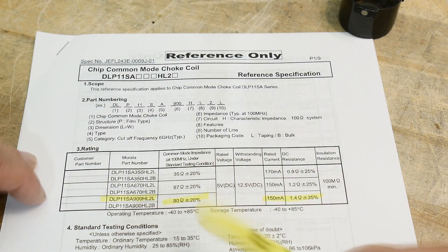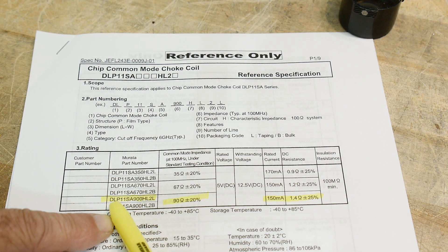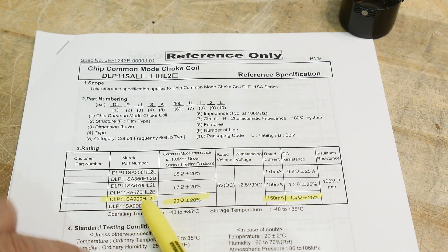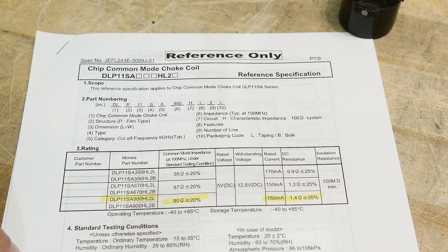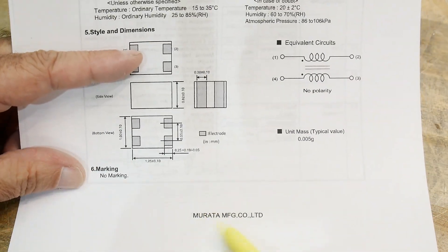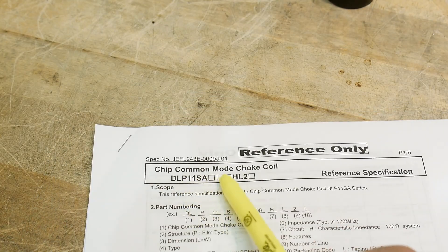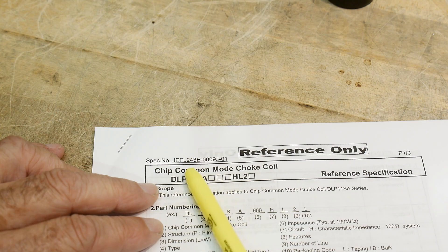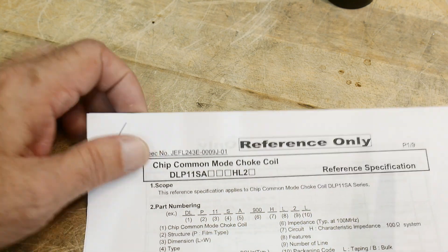Alright, chip of the day. The chip of the day is a DLP11SA900HL2L. Yeah, that's a long one. This is by the Murata manufacturing company, and it is a common mode choke coil.